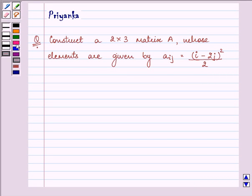Hi and how are you all today? My name is Priyanka and the question says construct a 2 into 3 matrix A whose elements are given by Aij equals I minus 2j whole square divided by 2. So let's proceed with the solution.